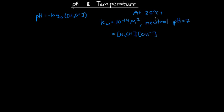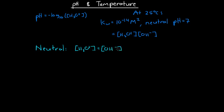What we're going to do first is show how we can work out that the pH of a neutral solution at 25 degrees Celsius is equal to 7, using this information. What is a neutral solution? A neutral solution is a solution in which the concentration of hydronium is equal to the concentration of hydroxide. So in a neutral solution at 25 degrees Celsius, if our ionization constant is equal to 10 to the negative 14,